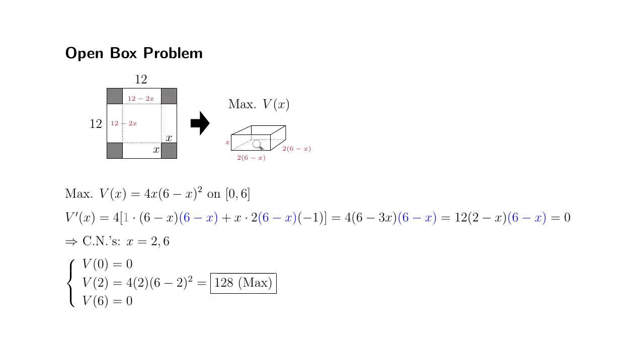So maximum value of this open box is 128, and its dimension is going to be, since this happens when X equals 2, and then this dimension is 2 times 6 minus 2, so it's 2 times 4, so it's 8. So it's 2 by 8 by 8 is the dimension of the largest possible open box through this construction.